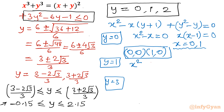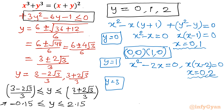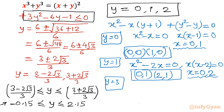For y equals 1, the quadratic gives x(x minus 2) equals 0, so x equals 0 or x equals 2. The ordered pairs are (0, 1) and (2, 1). Now let us put y equals 2 into the quadratic. The two solutions give ordered pairs (1, 2) and (2, 2).